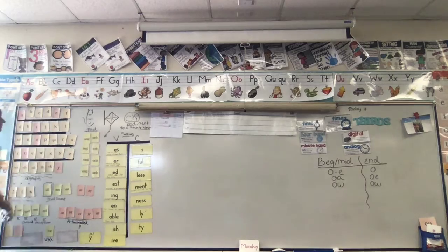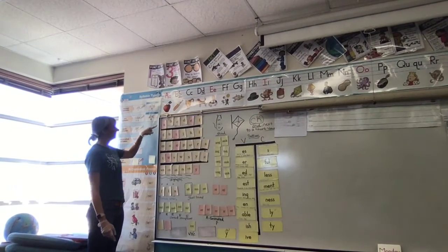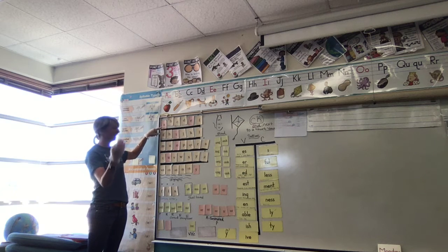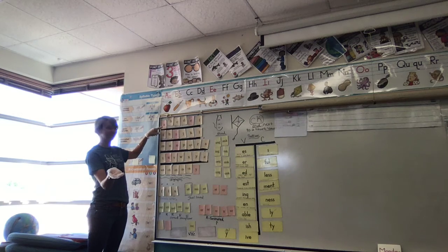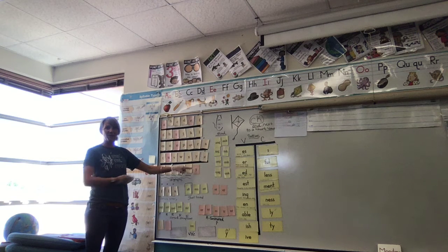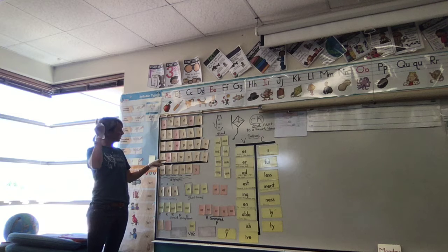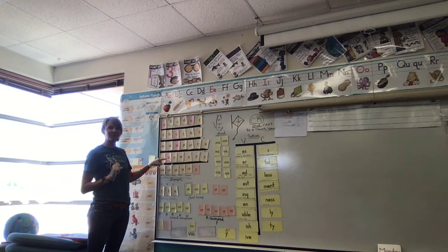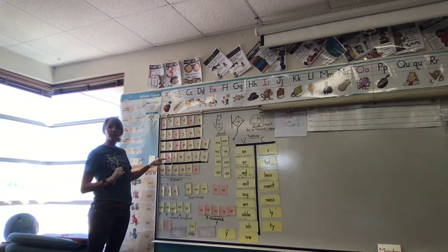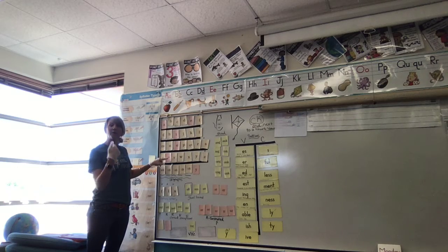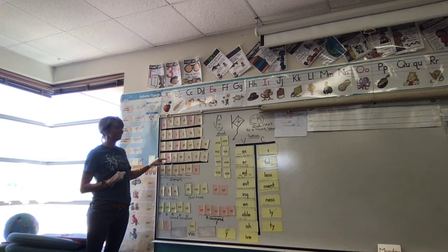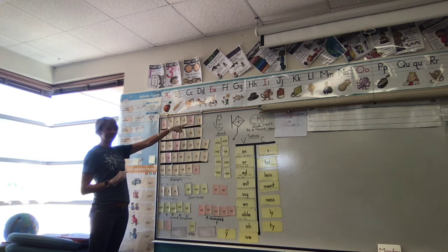At the end of a word, when I hear the long O sound, my options are O open syllable, O-E, and O-W. O-E will always be at the end of a word or syllable. O-W will likely be at the end, but can be found towards the beginning or middle of a word as well.